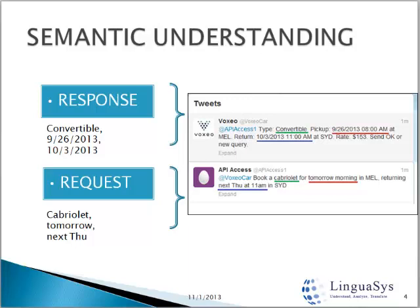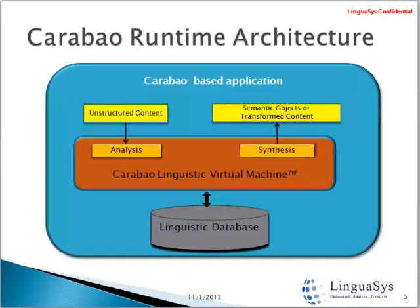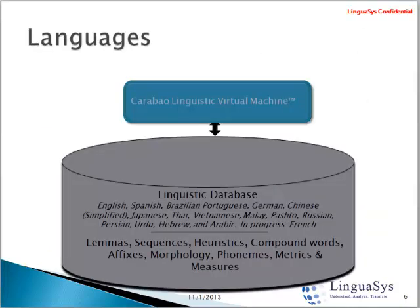Now we'll show you a fairly simple hotel reservation application that has a total of 576 lines of code, most of which are string literals for display purposes. Note that any CLVM-based NLU application will work automatically with input from any of our supported language models without modification.